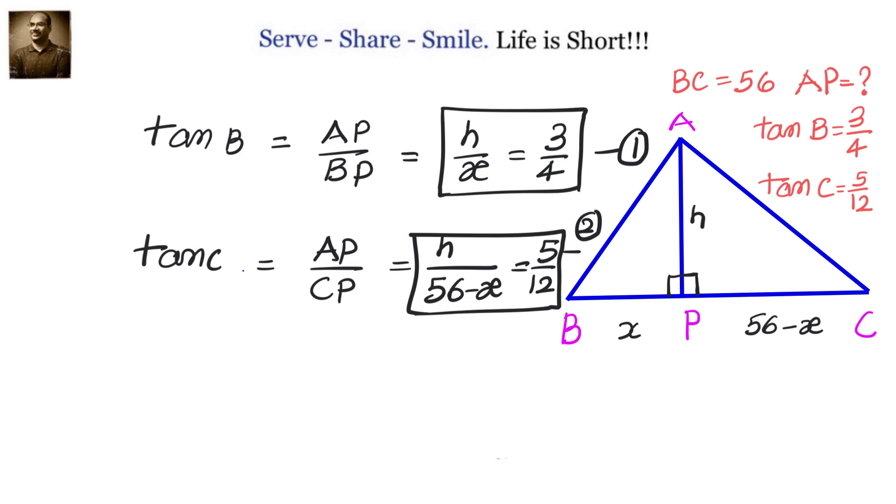Now we got two equations, two variables, very easy to solve. From the first equation, H equals 3X by 4. From the second equation, H equals 5 by 12 into 56 minus X. So equating these two values, we will have 3X by 4 equals 5 by 12 into 56 minus X.